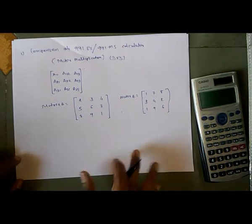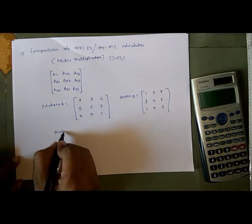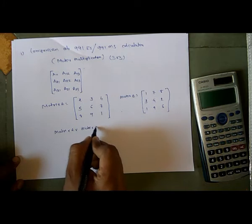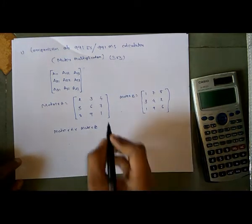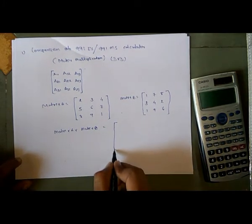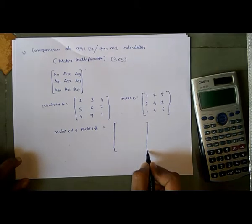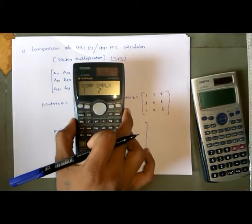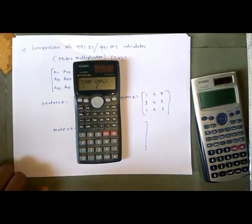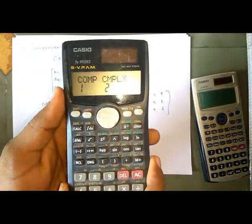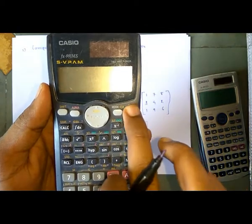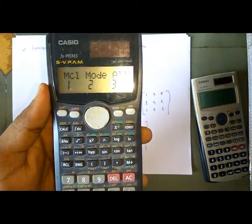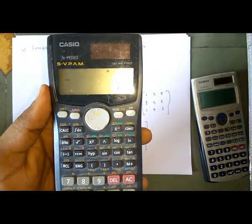Now I have to multiply matrix A by matrix B, and the answer will be a 3×3 matrix. Let's first revise the method with the help of the 991 MS calculator. First, press ON, then press Shift Clear, then press 3, 0, 0, Clear.